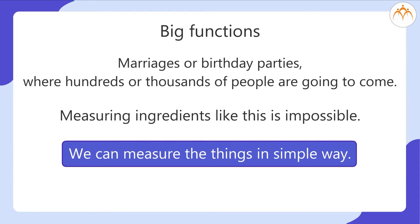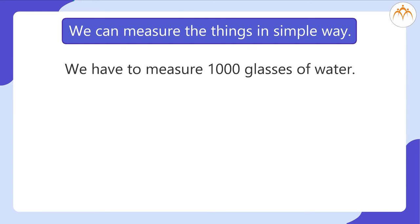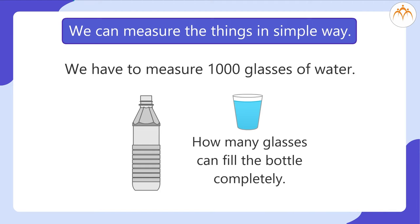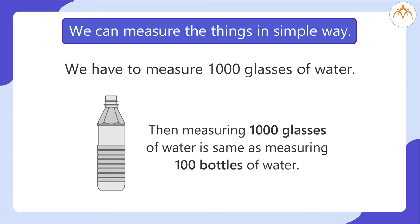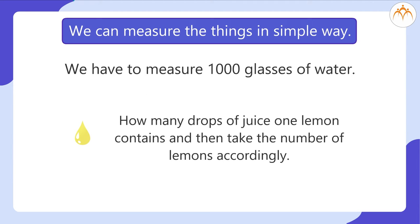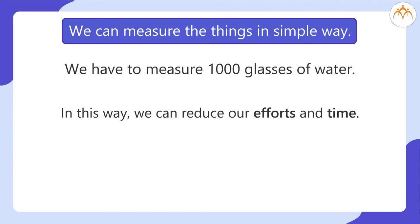But we can measure things in a simpler way. Suppose we have to measure 1000 glasses of water. We can take a large bottle and see how many glasses fill it completely. Say the bottle is filled by pouring 10 glasses of water — then measuring 1000 glasses is the same as measuring 100 bottles. Similarly, we can find how many drops of juice one lemon contains and take the number of lemons accordingly, reducing our effort and time.